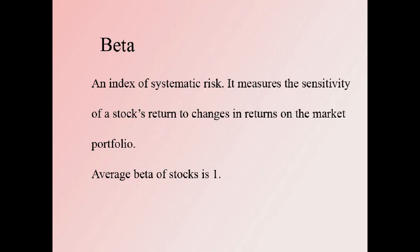Beta is an index of systematic risk — it describes the degree of change of a stock due to market changes. The average beta of stocks is 1. U.S. Treasury bills have a beta of zero because their return is fixed and unaffected by market changes. Stocks with a beta greater than 1 are more sensitive to market movements and carry higher risk; stocks with a beta less than 1 are less sensitive to market movement.